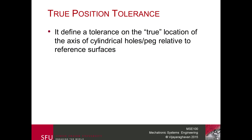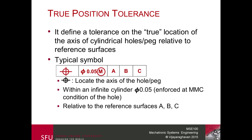Let's start by defining what a true position is. It is basically a tolerance on the true location of axes of cylindrical holes and pegs related to reference surfaces. Typically the symbol looks like a bullseye, followed by a diameter symbol, the tolerance value, then M within a circle, followed by the letters A, B, and C.